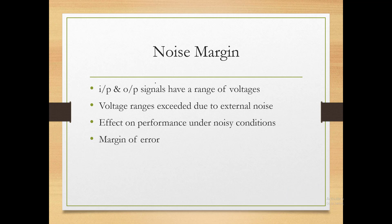Now let's discuss noise margin. Before that, a brief note on DC power supply: TTL series requires high power, while CMOS has low power requirements. CMOS switching speed, though comparable to TTL, is slightly slower.